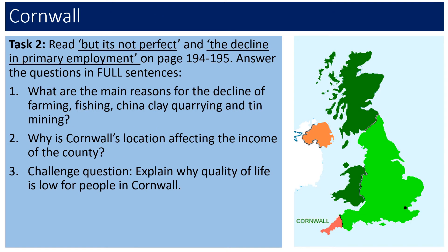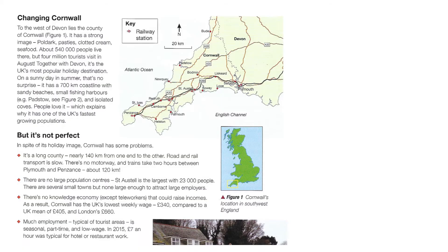On the next few slides, read 'But It's Not Perfect' and also 'The Decline in Primary Employment.' I would like you to answer these three questions: What are the main reasons for the decline of farming, fishing, china clay quarrying and tin mining? Why is Cornwall's location affecting the income of the county? And explain why quality of life is low for people in Cornwall.